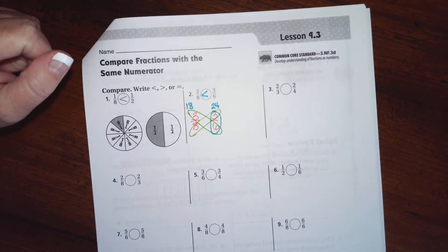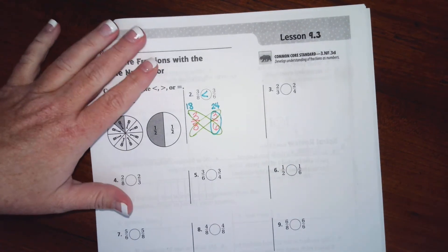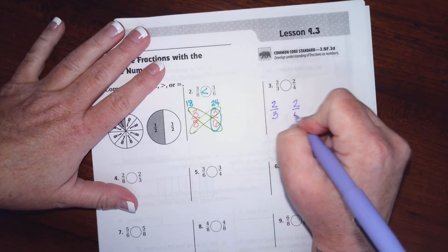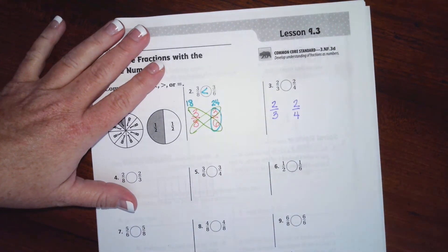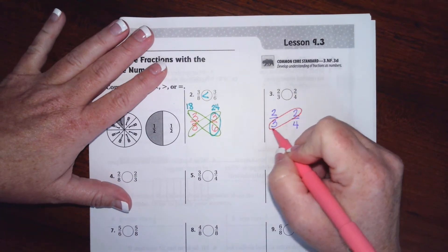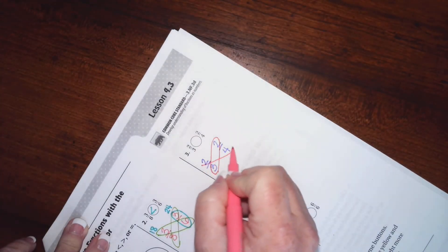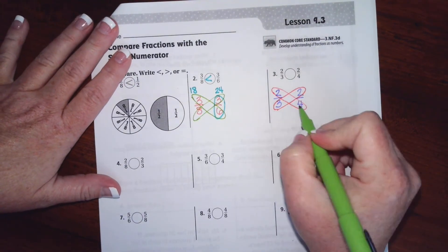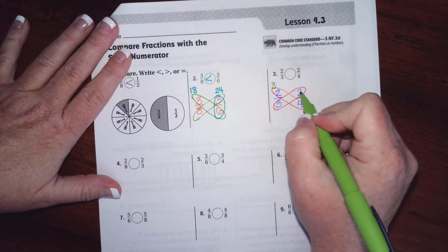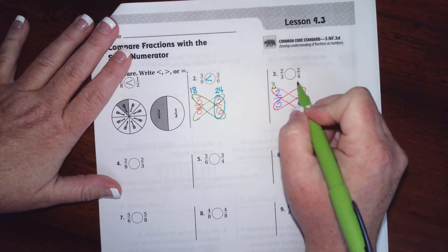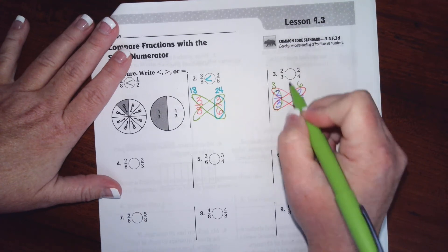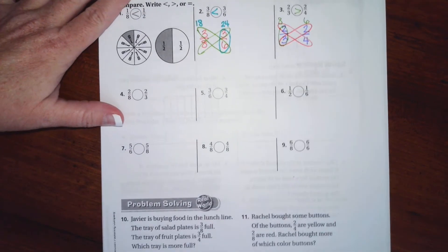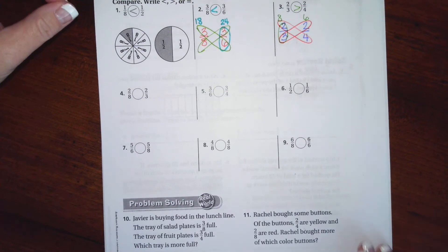Let's do it again. Two-thirds and two-fourths. So two times four is eight, two times three is six. Two-thirds is bigger. I'm going to let you guys finish up through number nine doing that. Don't make it harder than it's got to be guys, it's super easy.